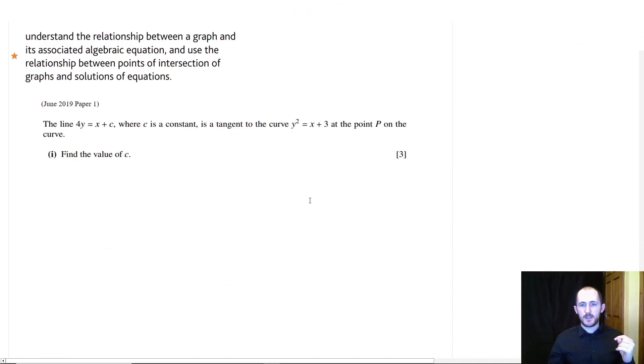The next thing that you need to do is understand the relationship between a graph and its associated algebraic equation and use the relationship between points of intersection of graphs and solutions of equations. Basically, you should understand that when two lines or curves or whatever intersect, it means that both of the x and y values are the same. So what you can do there is you can equate them if they're both y equals or you can substitute them in similar to a kind of quadratic simultaneous equation.